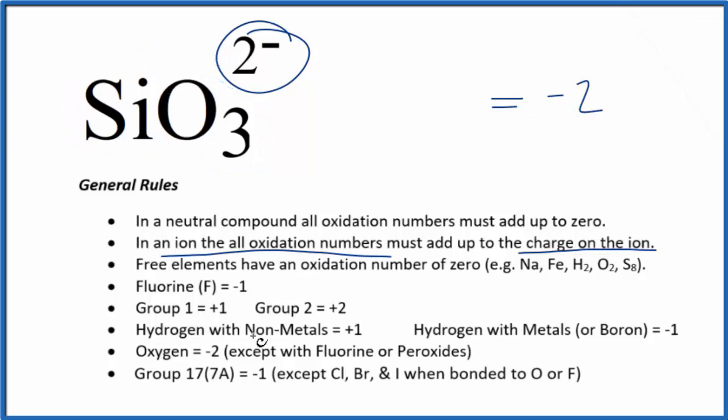We don't know Si from our rules here, but oxygen, that's always a minus 2, unless it's bonded to fluorine or it's in a peroxide. So the oxygen is going to be minus 2, each one of them. So we could say X for the Si, and we could set up an equation.